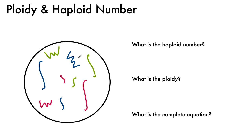Alright, so now let's do a little example. We've got this cell here, and we're trying to find the haploid number, the ploidy, and the complete equation with both the ploidy and the haploid number.